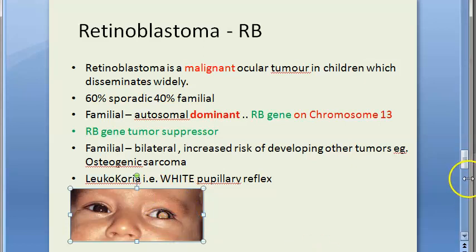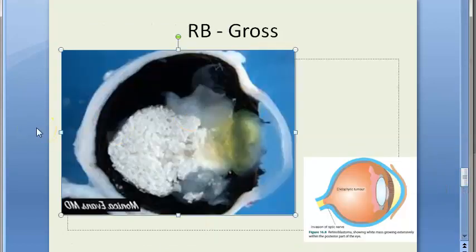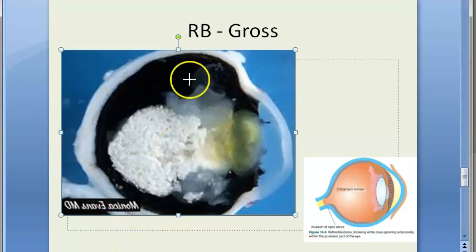On gross examination, the tumor characteristically appears as a white mass within the retina. It is partly solid and partly necrotic. The tumor may be endophytic, meaning it protrudes into the vitreous, or exophytic, meaning it grows between the retina and the pigment epithelium. There can also be invasion into the optic nerve.